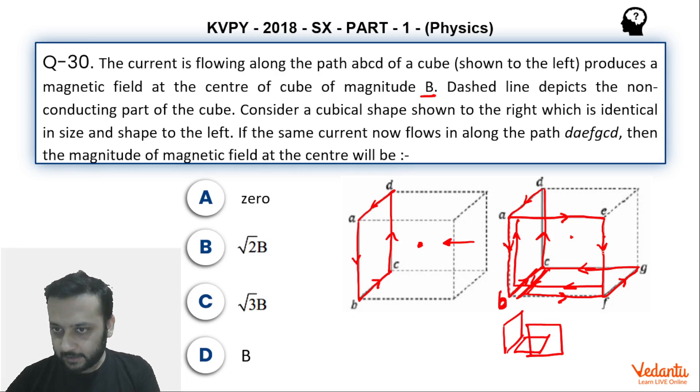One is B to A, B F E. In this current is flowing anti-clockwise, you can see. Then A D C B, which is this. In this current is flowing anti-clockwise looking from this side. And then one is C B F G. In this current is flowing anti-clockwise looking from the top.